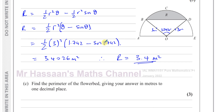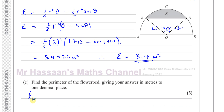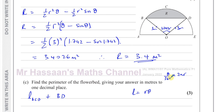Now we have to find the perimeter of the flower bed, which is the length of arc BCD plus the length of line BD. For the arc length, we use the formula R theta when dealing with radians — because theta over 360 times 2pi R simplifies to R theta when the pi's cancel. So R theta is the arc length formula in radians, which gives us the arc BCD.